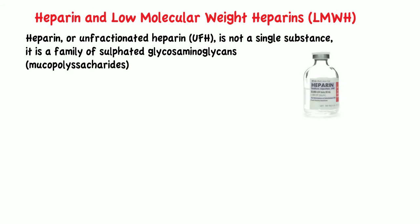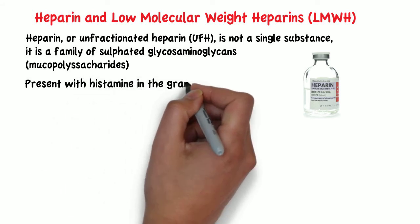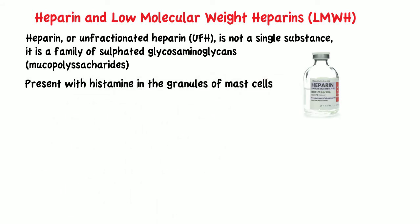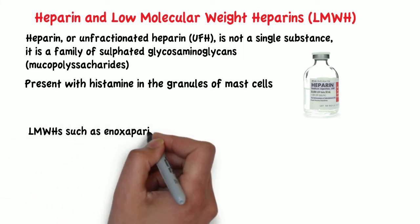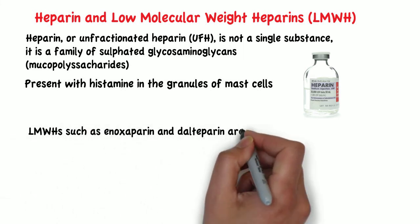Heparin is naturally occurring in the body. It is present, together with histamine, in the granules of mast cells. One interesting fact is that heparin was actually discovered by a second-year medical student. Low molecular weight heparins, such as enoxaparin and dalteparin, are heparin fragments.